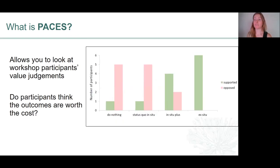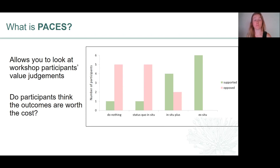PACES also has a facility to allow you to look at what your workshop participants think about the conservation outcomes of each of those management plans, and to canvass their opinions about whether they think those management plans are good value for money. This could be really useful in a contentious situation where you want to involve lots of different stakeholders or people from different organisations, and you're interested in knowing their willingness to pay for those conservation outcomes. You get an output that shows you, for each management plan or the do-nothing scenario, how many of your participants support or are opposed to that plan.